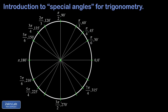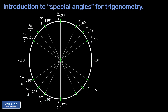Next, 30 degrees less than 270 is 240. In radians, 3 pi over 2 minus pi over 6 — multiplying 3 pi over 2 by 3 over 3 gives 9 pi over 6, and 9 pi over 6 minus pi over 6 is 8 pi over 6, which reduces to 4 pi over 3. In the fourth quadrant, 30 degrees more than 270 is 300 degrees. In radians, 3 pi over 2 plus pi over 6: getting a common denominator gives 9 pi over 6 plus pi over 6, which is 10 pi over 6, reducing to 5 pi over 3.